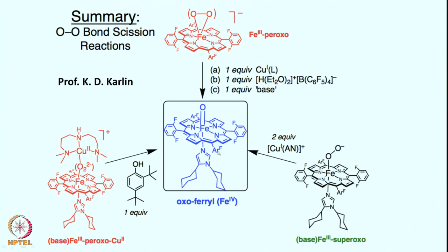One can also independently start from iron 3 peroxo species — where oxygen is reduced twice, once from iron and once from an external electron source — to give the iron 3 peroxo species. This iron 3 peroxo species can then react with copper 1 as well as a proton and base to give rise to the iron oxo species. If the base — cyclohexyl dicyclohexyl imidazole — is missing, this reaction does not work. Similarly, if the proton or copper 1 is missing, this has no relevance to the iron-copper heme peroxidase chemistry.